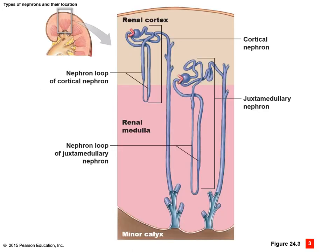Here's a diagram example of the two nephron types. Note that the cortical nephron is primarily in the renal cortex with just a minor dip into the renal medulla — the nephron loop barely dips into the medulla. Again, 85% of all nephrons are cortical. The juxtamedullary nephron starts lower in the cortex, and its nephron loop is much longer, extending much deeper into the medulla, allowing it to produce a more concentrated form of urine.